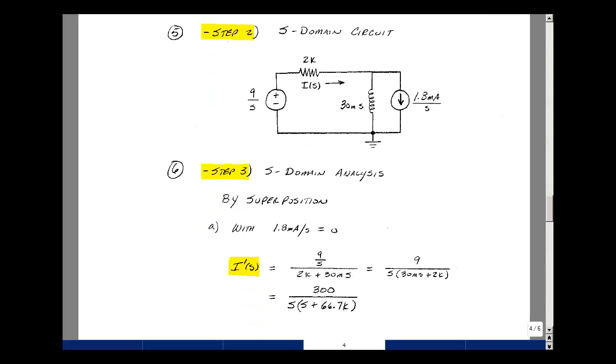Step three, we do the S domain analysis, and since I have two sources, I could do superposition. Setting this current source equal to zero as an open circuit, then the current I(s), due to the first source, I'll call it I'(s), is going to be the voltage divided by the total impedance of 2k plus 30 mH times S. And that's this expression right over here. Multiply the numerator and denominator by S. I'm going to pull out a 30 mH out of this term, and I'm left with just S, and then 2k divided by 30 mH is 66.7k, and then 30 mH divided into 9 is 300.